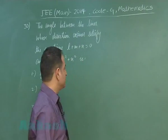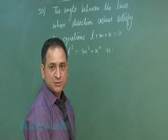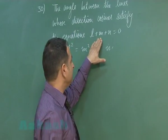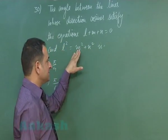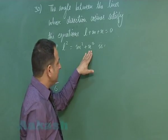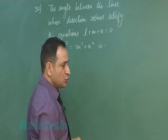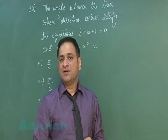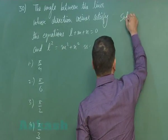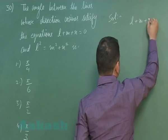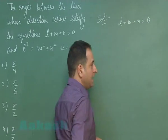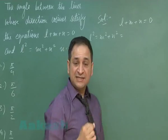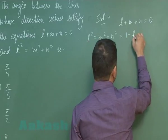Problem number 30 is related to three-dimensional geometry. The angle between lines whose direction cosines satisfy the equations: l + m + n = 0 and l² = m² + n². We have to find the angle between the two lines. By solving these two equations we get more than one solution set for the direction cosines. Since l² + m² + n² = 1, we can write m² + n² = 1 - l², which gives l = ±1/√2.